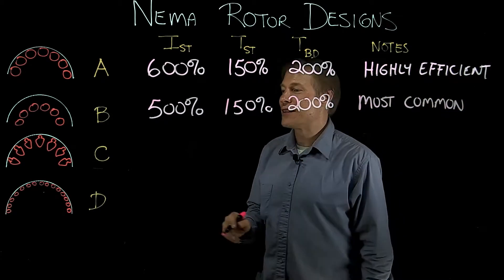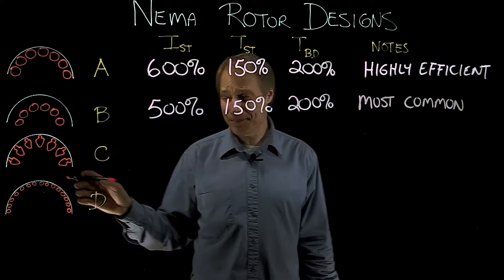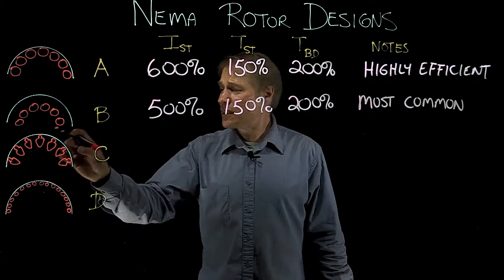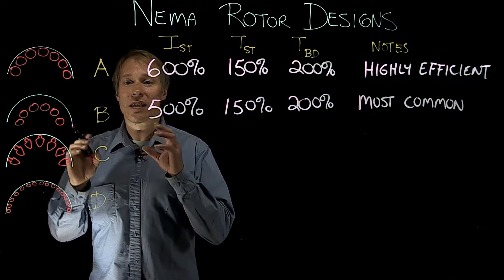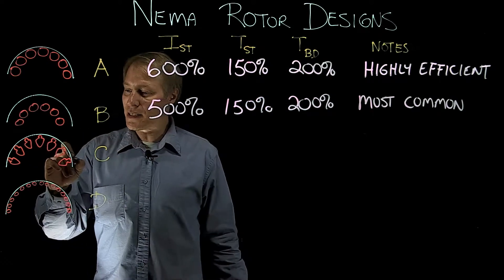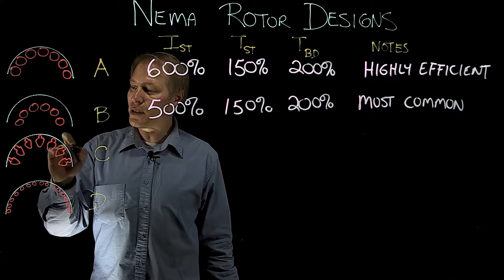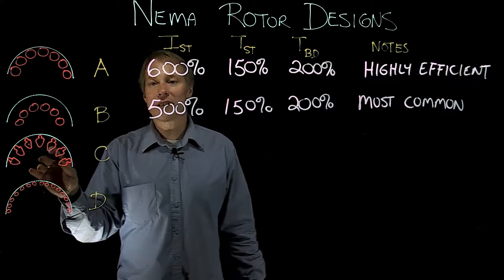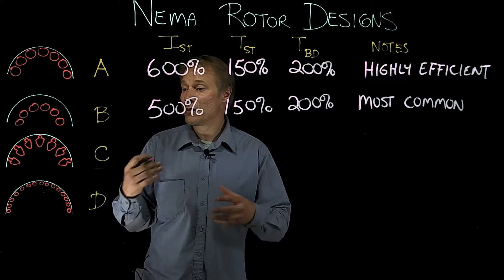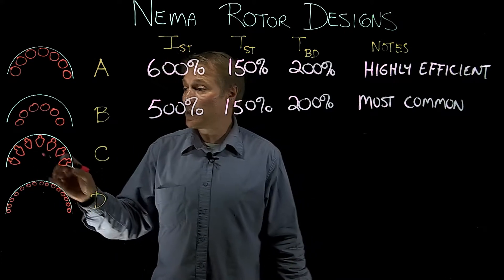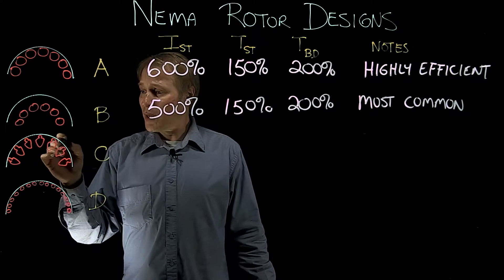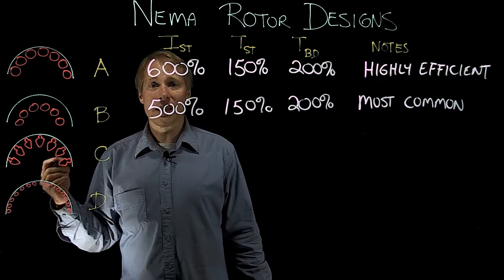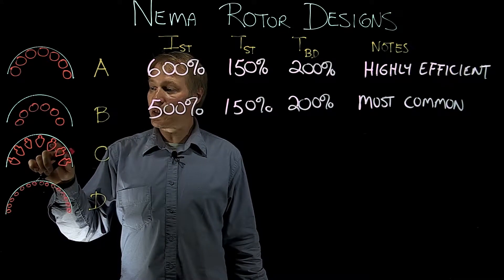Alright, moving on to the C design. Now the C design is quite special because it really has two sets. It has an outer set of rotor bars and then an inner set. In this case they're connected, but sometimes they're not, it just depends on the manufacturer. But what we have is called a double cage design, so we've got outer rotor bars and inner rotor bars.